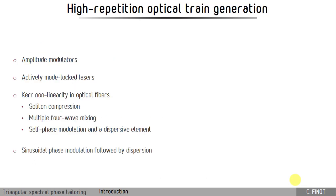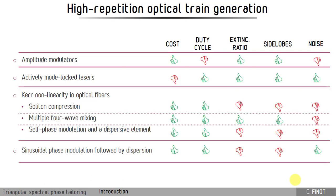All those methods have some advantages and some drawbacks, and if we try to compare them in terms of cost, duty cycle, extinction ratio, sidelobes, or noise, what we can see is that there is no perfect method. There are some that are very efficient but costly, and there are some methods, such as the one based on sinusoidal phase modulation, that is not costly, that can provide low duty cycle, low noise, but the result is impaired by strong sidelobes or a poor extinction ratio.